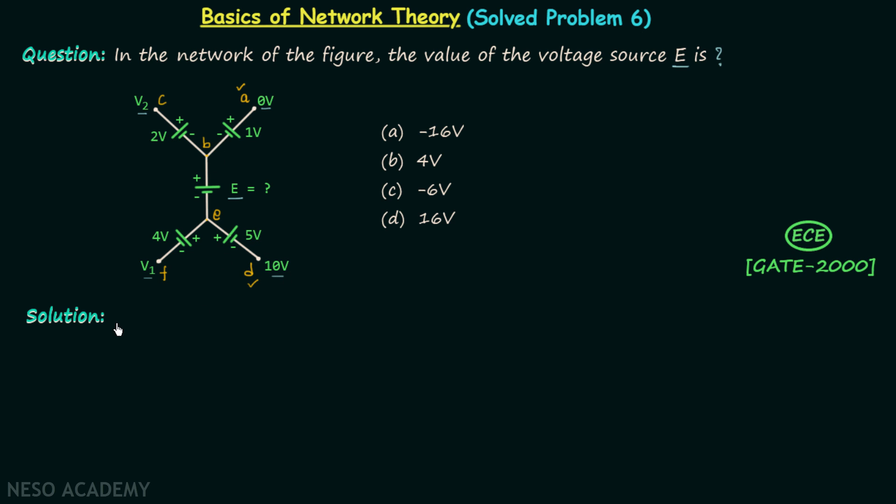So we are applying the KVL from A to B, then from B to E, and then from E to D.